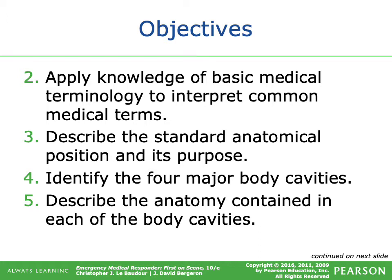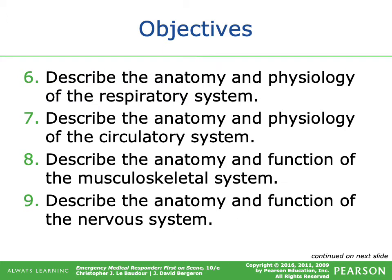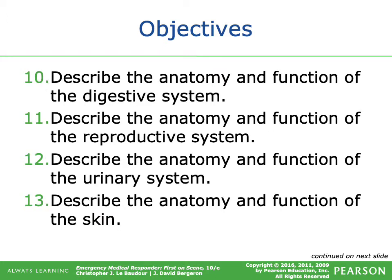The next objectives we're going to hit on: apply knowledge of basic medical terminology to interpret common medical terms; describe the standard of anatomical position and its purpose; identify the four major body cavities; describe the anatomy contained in each body cavity; describe the anatomy and physiology of the respiratory system and circulatory system; describe the anatomy and function of the musculoskeletal system and nervous system; describe the anatomy and function of the digestive system and reproductive system.